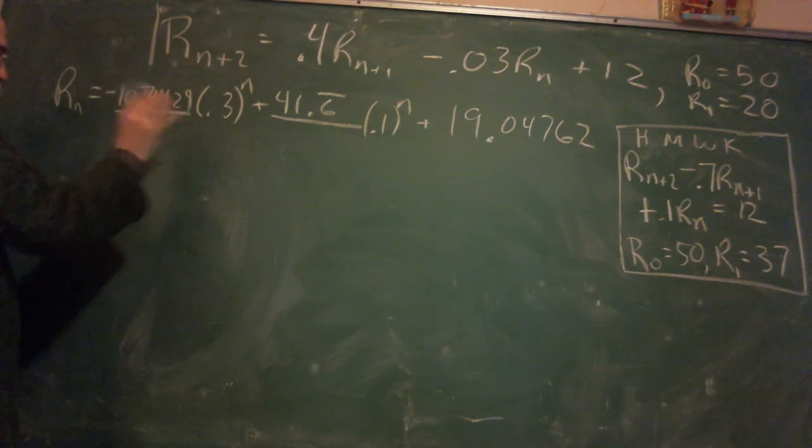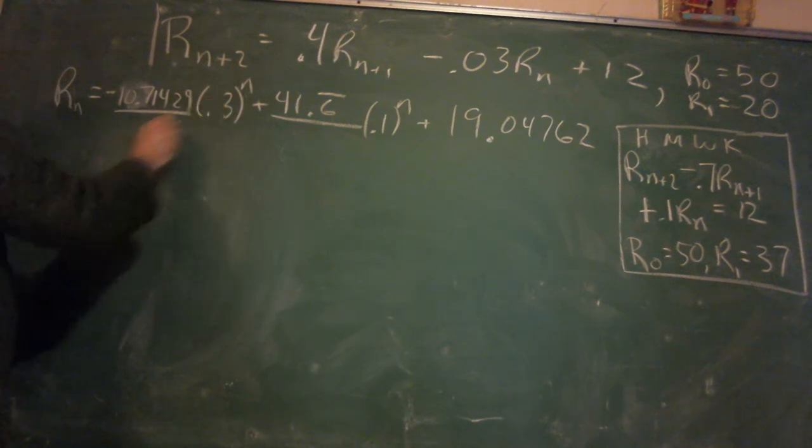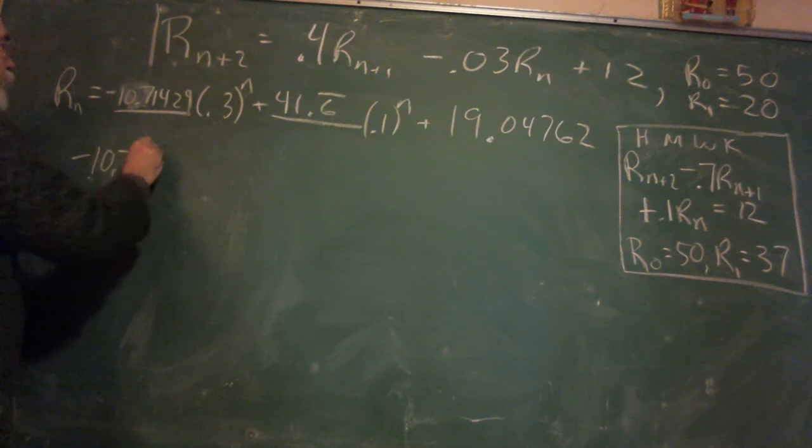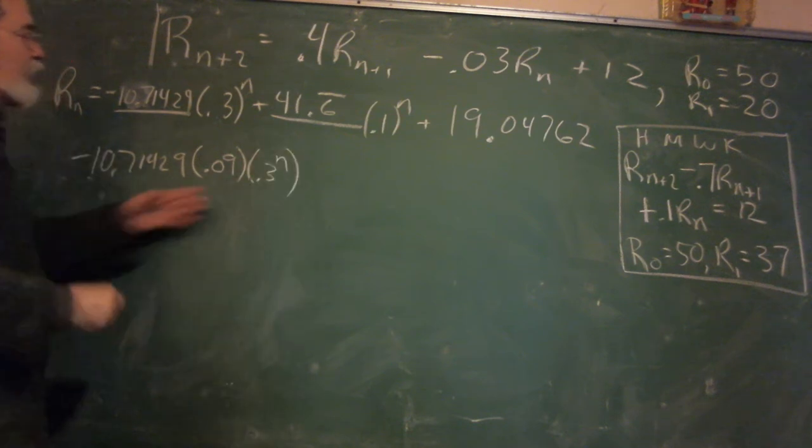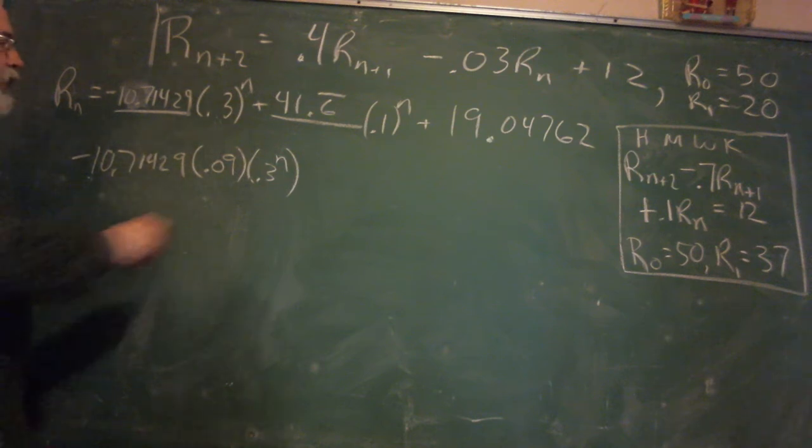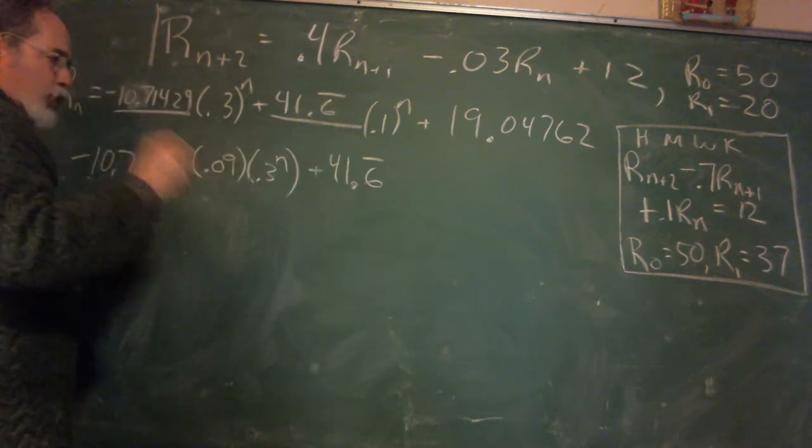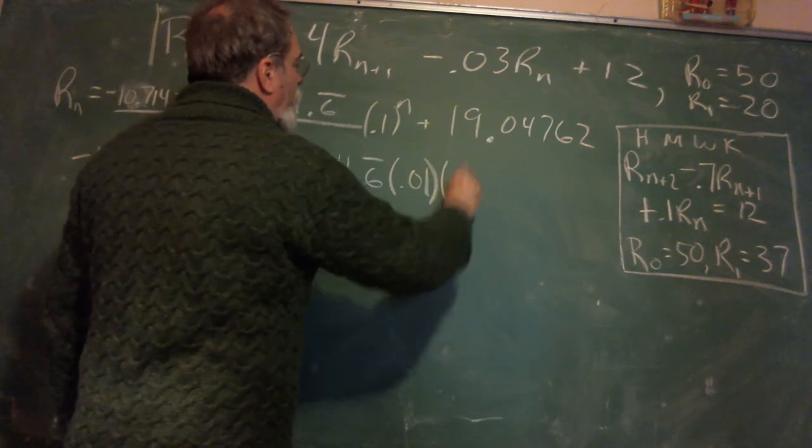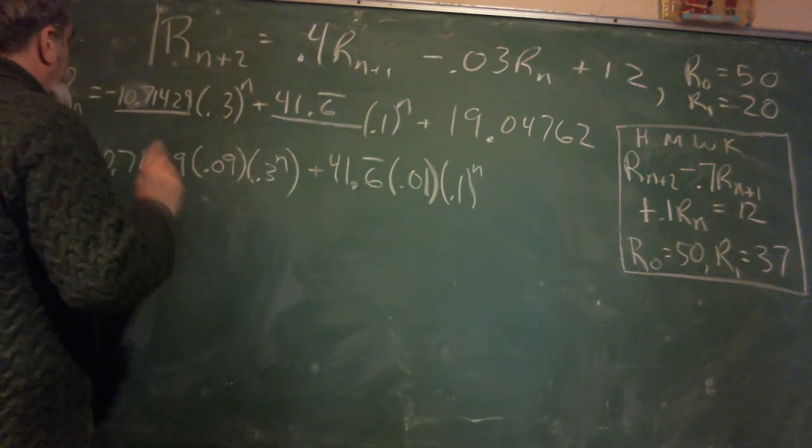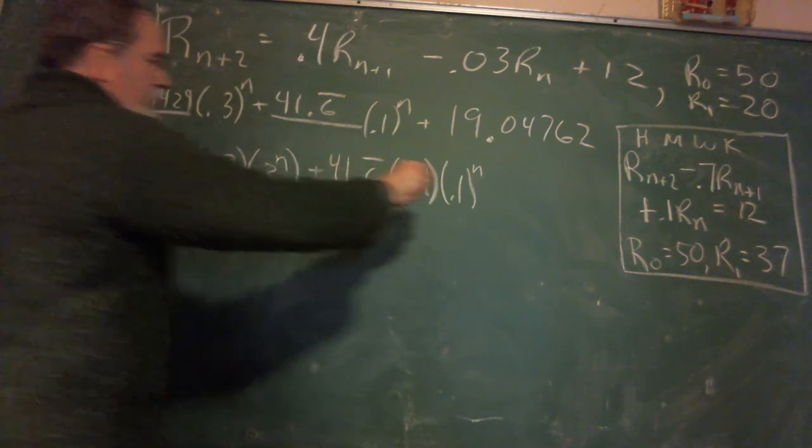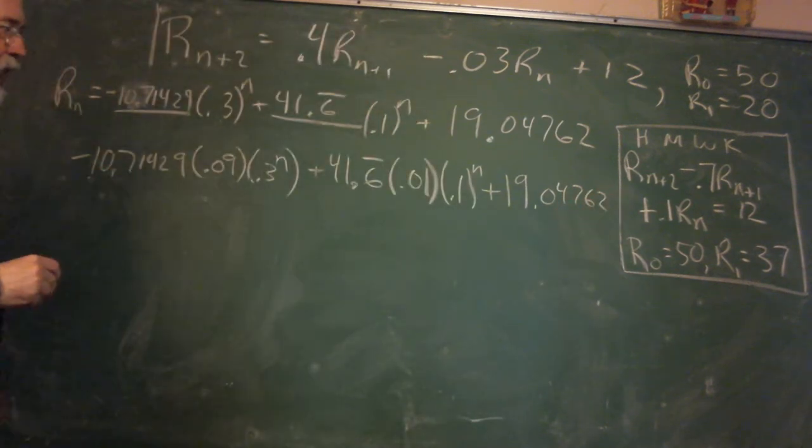Suppose we want to do that in the difference equation. Well, this is R sub N. So we have to do, if you wanted to check it, the big check would be, for N plus 2, that's 0.09. So I have negative 10.71429 times 0.3 squared, 0.09, times 0.3 to the N. I'm doing that so that this term can rock and roll with all the other 0.3 to the N's. Next one, I've got the 41.6 bar, and it's times 0.1 squared, which is 0.01, times 0.1 to the N. And that's just a second now, that's my, I'm trying to do this to be N plus 2, so this is plus the 19.04762. So all this is just R sub N plus 2.